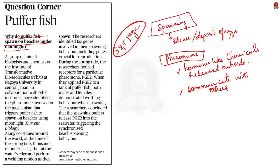Using this pheromone PGE2, puffer fish communicate with each other and perform synchronized beach spawning. This is about the puffer fish and its spawning behavior.